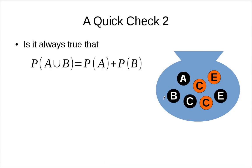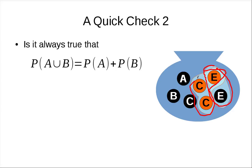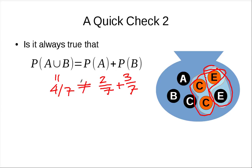Is it always true that the probability of a union of two events equals the sum of the probabilities of each event? This is not true. From the previous example, the union of event A and event B equals four over seven, but the probability of picking an E is two over seven and picking orange is three over seven — adding those gives five over seven, which is not equal. So this is not always true.